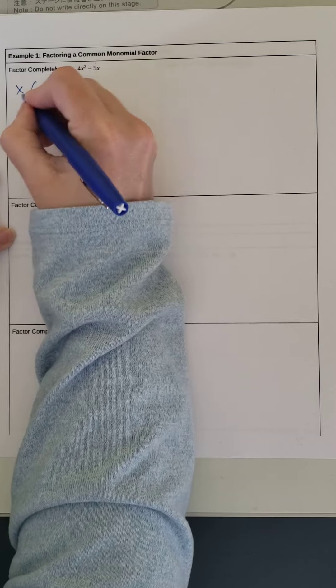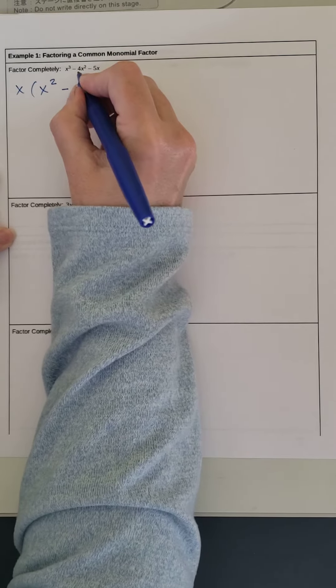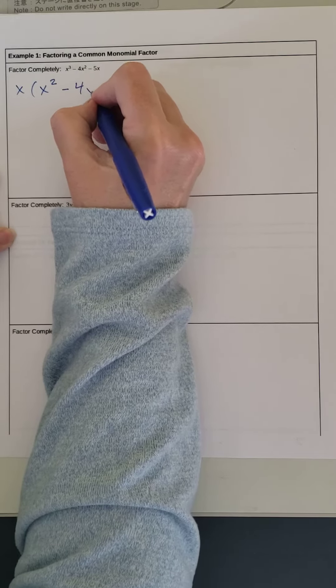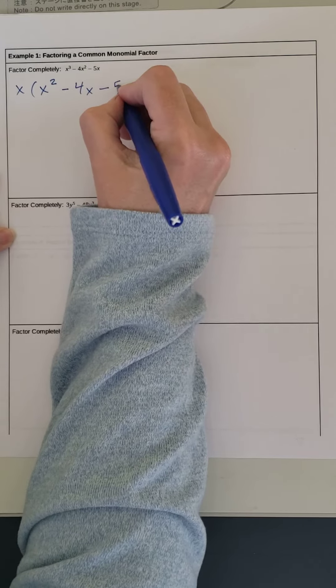So x cubed, if we factor out an x, we have x squared. Minus 4x squared, factor out an x, we have 4x. Minus 5x, factor out an x, we have 5.